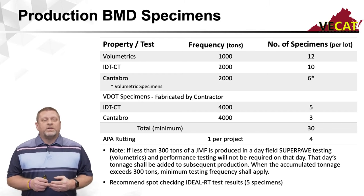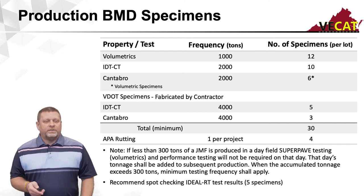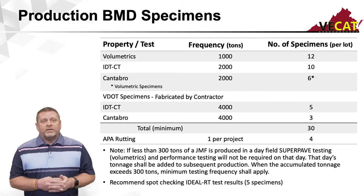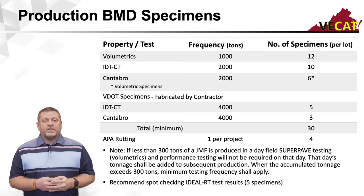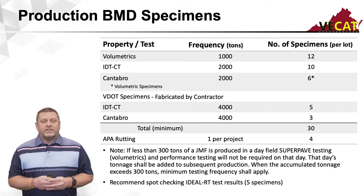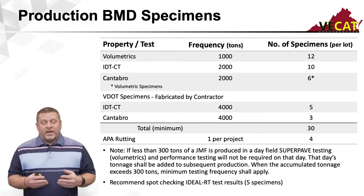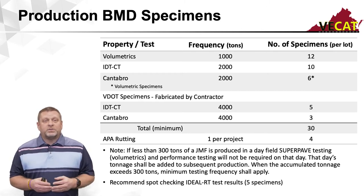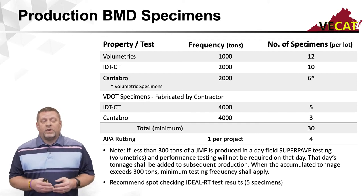With production testing, there is quite a bit of it. In addition to all the samples mentioned, during the BMD class you're going to hear about the Ideal RT rutting test. I highly recommend that while you're making all these other specimens on the sample, you also make five specimens for the Ideal RT test so you can get this test accomplished.